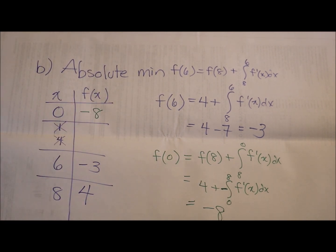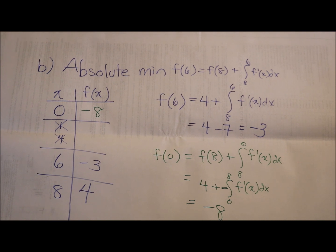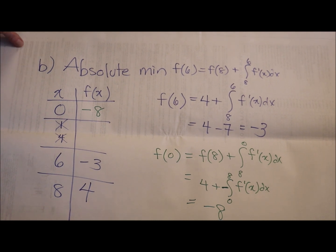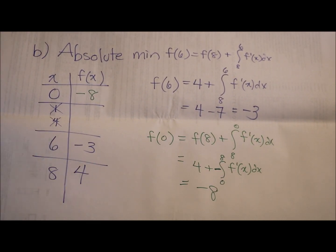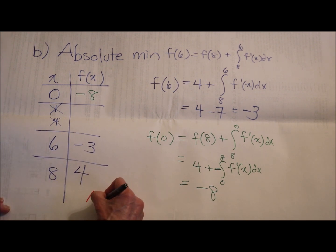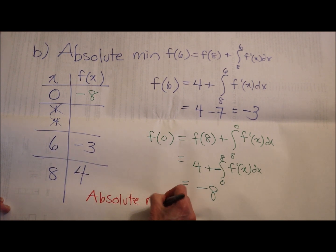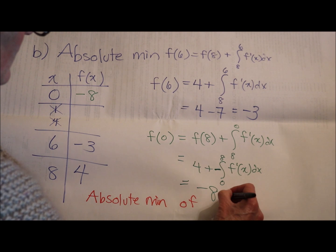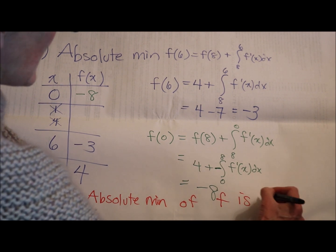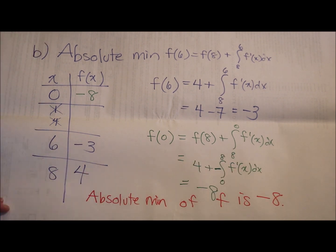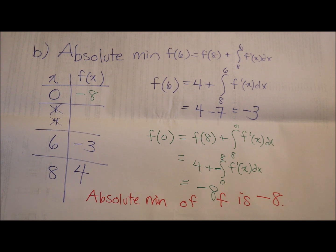So the question is, what is the absolute min? When they ask it like that, they are asking for the value. So the absolute min of f of x is negative 8. The absolute minimum value is negative 8.